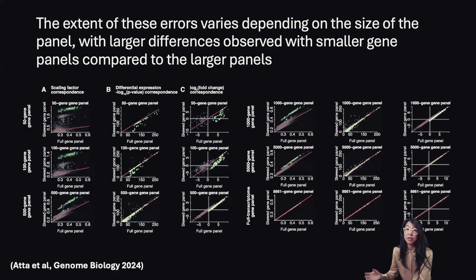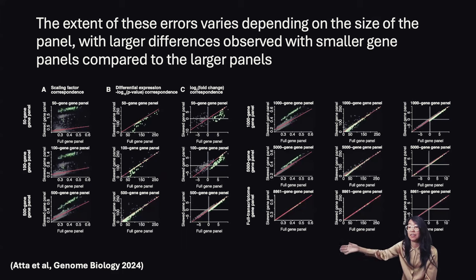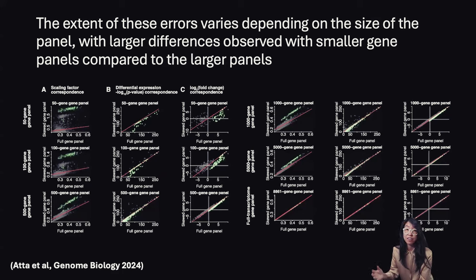In our paper, we further demonstrate using a simulation framework — using single-cell RNA-seq data for which we restrict analysis to select genes as if we had a targeted gene panel — that the extent of these library-size normalization induced errors expectedly varies depending on the size of the targeted gene panel. These differences generally tend to be greater for smaller skewed gene panels compared to larger skewed gene panels, as larger panels tend to be better approximations of full transcriptomic characterization. As such, we speculate that as imaging-based spatially resolved transcriptomic technologies continue to improve and expand the number of genes that can be simultaneously profiled, the extent of these library-size normalization induced errors will generally decrease.